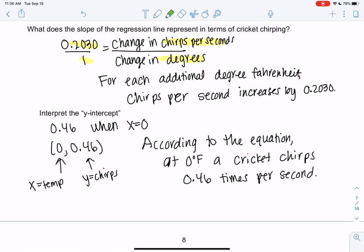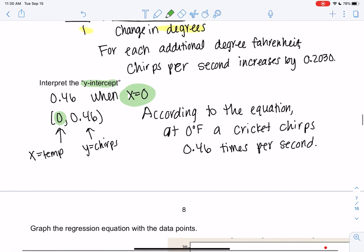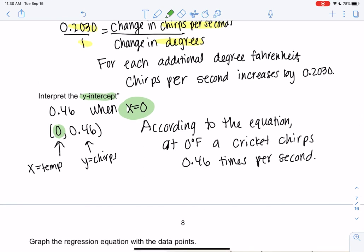According to the equation, if it were 0 degrees Fahrenheit, a cricket would chirp 0.46 times per second. And the y-intercept is always when x is 0. So I'll see you in the next video. We'll graph it in the next video.